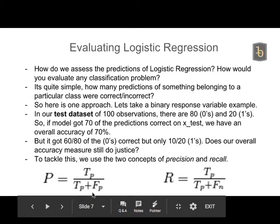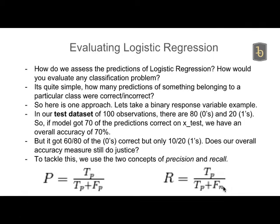Precision is a measure of how right your positive predictions were. Recall is TP over TP plus FN. A false negative is the opposite of a false positive: I falsely predicted class 0 when the customer actually belonged to class 1 — I predicted he was not going to default but he did. As a bank, I want my false negatives to be as low as possible; I want to catch all the defaults.